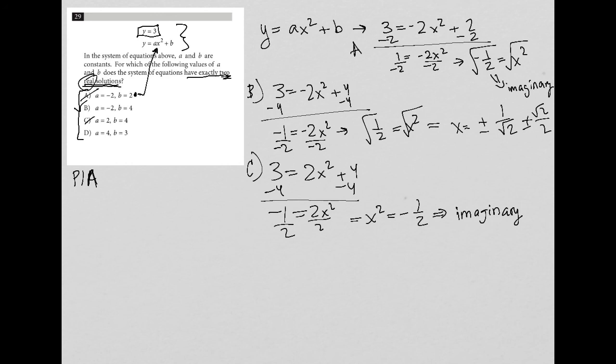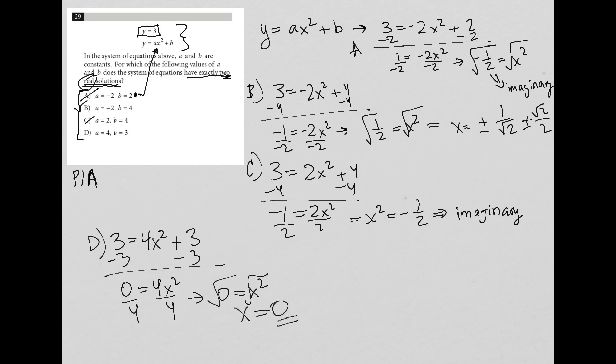And then lastly, we have choice D to try. So I'd have 3 equals 4X squared plus 3. In this case, I subtract 3, subtract 3. So I'd have 0 equals 4X squared. And as you know, when I divide by 4, I end up with 0 equals X squared. And when I square root 0, I just have X equals 0, which means I only have one value. It's real, but it's only a single value. I want 2 values, and therefore D is gone.